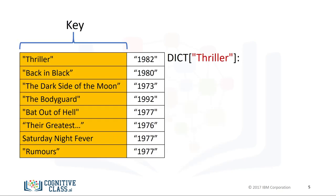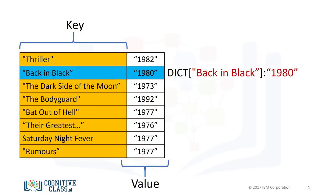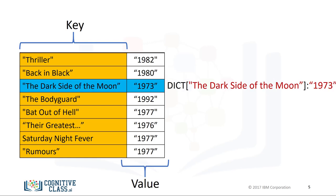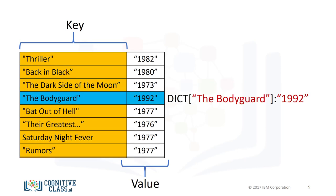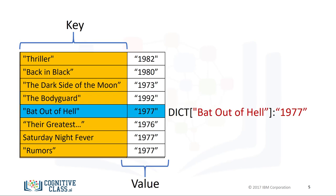The key is used to look up the value. We use square brackets, where the argument is the key, and this outputs the value. Using the key 'Back in Black' returns the value 1980. The key 'The Dark Side of the Moon' gives us the value 1973. Using the key 'The Bodyguard' gives us the value 1992, and so on.